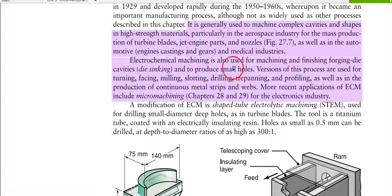Versions of this process are used for turning, milling, slotting, drilling, trepanning, and profiling, as well as the production of continuous metal strips. More recent applications of electrochemical machining include micromachining for the electronics industry, where very little material needs to be removed.